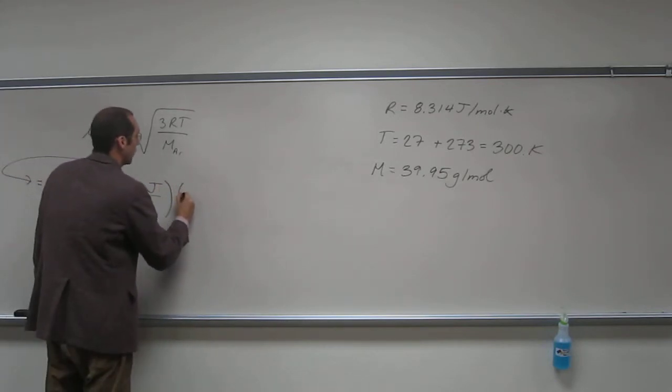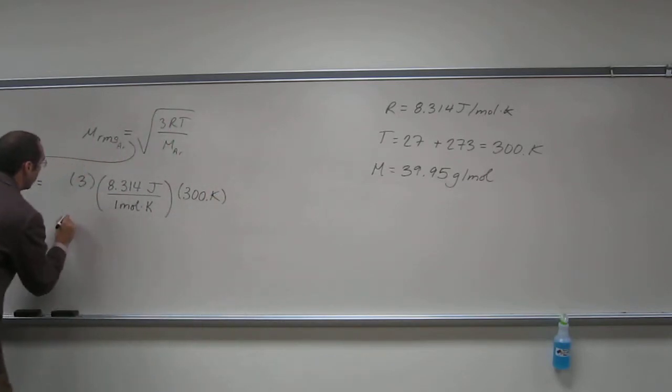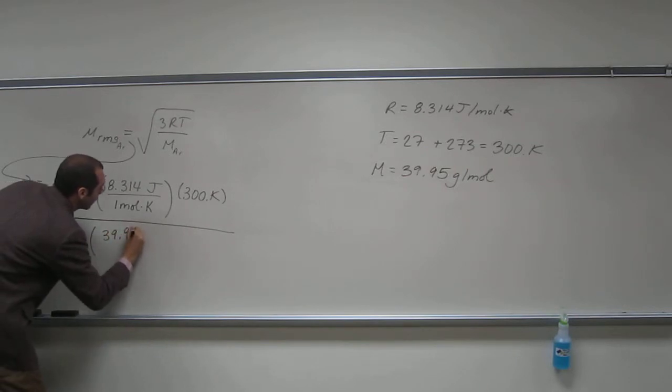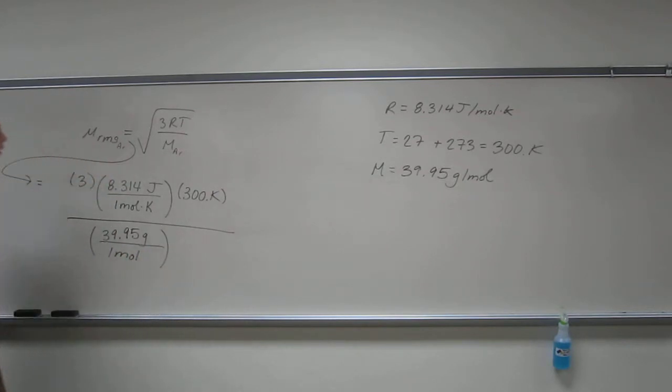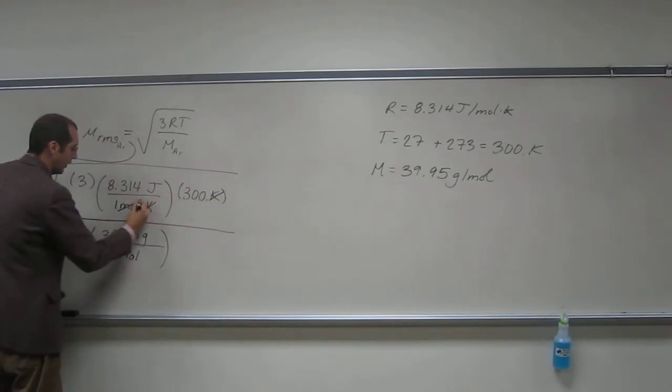And then the temperature is 300 kelvin. We divide that by the molar mass, which is 39.95 grams per one of these moles. And then, of course, the square root sign. And then let's just cancel out some of these things. So we can cancel out kelvin there, and we can cancel out moles there.